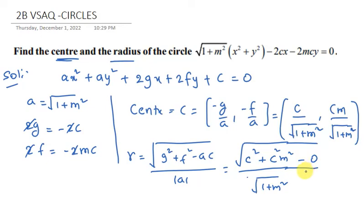Taking c squared common from the numerator, we get mod c times square root of 1 plus m squared divided by square root of 1 plus m squared. These cancel, giving the answer: mod c.